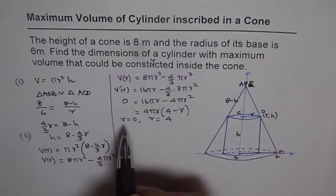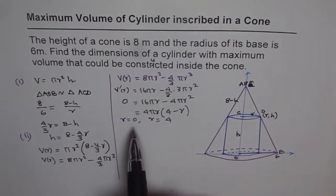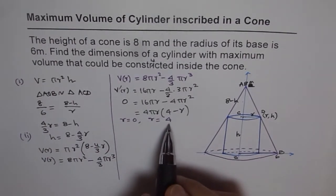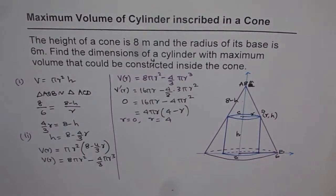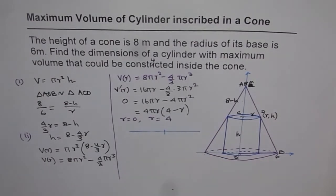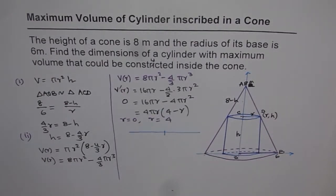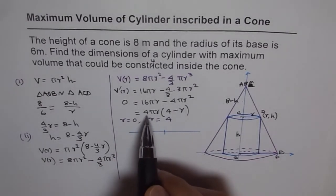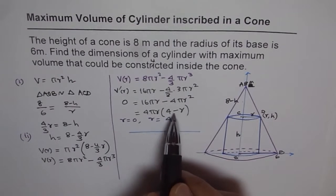Now, if I have r as 0, then the volume is 0. So indeed, it is not a maximum, it could be minimum. So, for r equals to 4, we can get a maximum value. Now, we should check whether it is indeed a maximum value or not. We can do this test with the help of first derivative itself, that is v dash r. So for that, we know v dash r is actually equals to 4πr, 4 minus r.